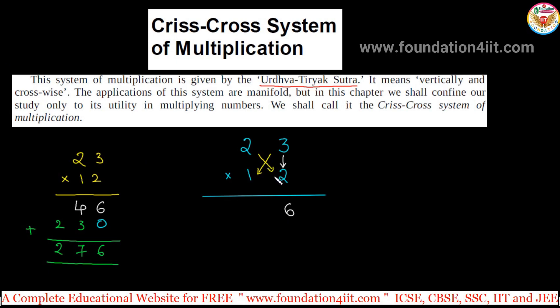Again, step 2: these both crossway you can multiply and add in mind internally. This is 2 into 2 is 4, plus 3 into 1 is 3. So 4 plus 3 is 7.